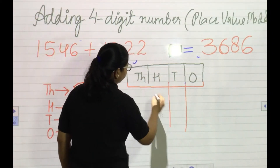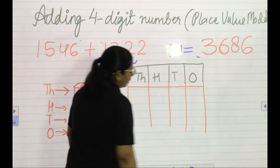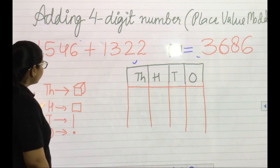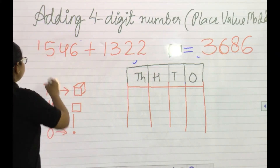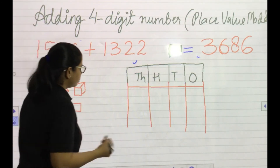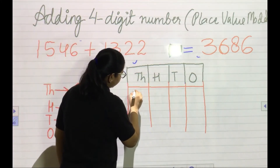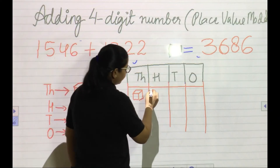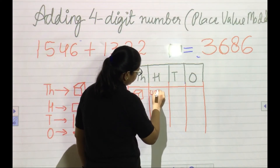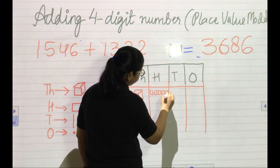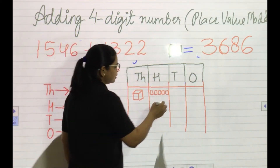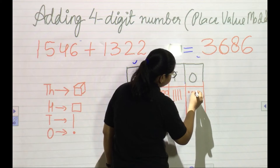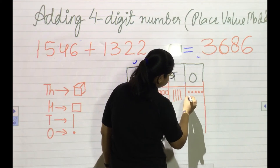First of all, you have to draw the area where we will represent all the blocks. Thousands: how many thousands in the first number 1546? One cube here. Five hundreds — so five squares: one, two, three, four, five. Then four tens: one, two, three, four. Then six ones — six dots: one, two, three, four, five, six. That's our first number represented.